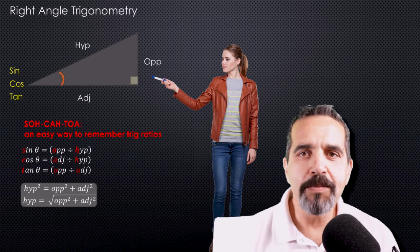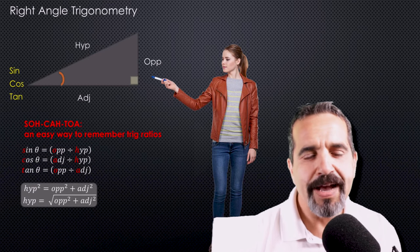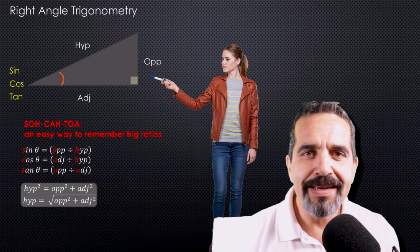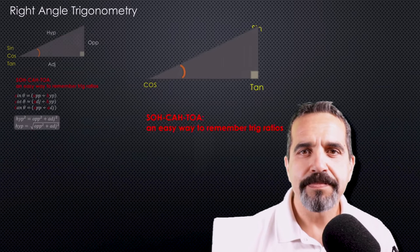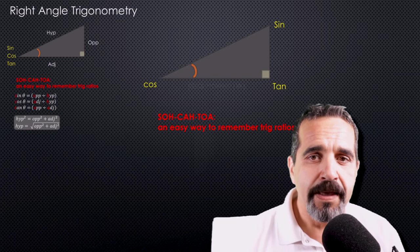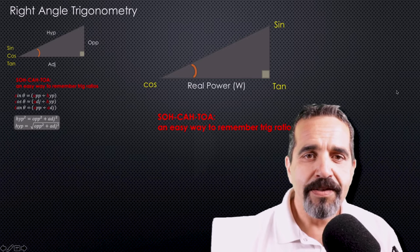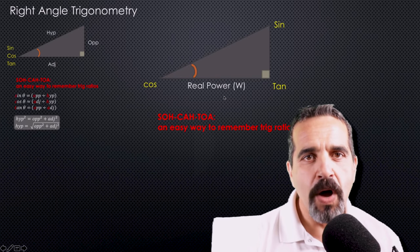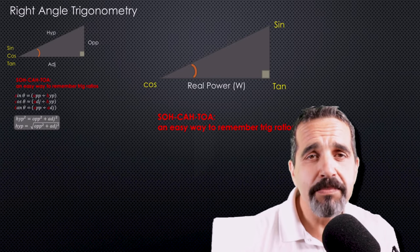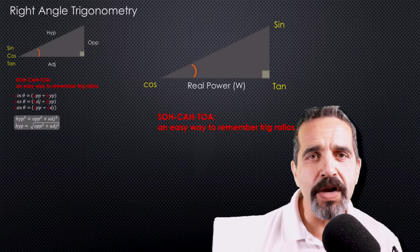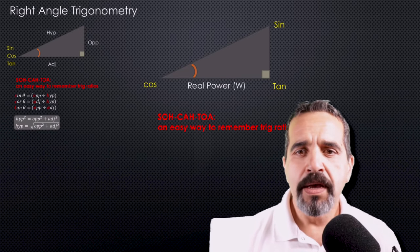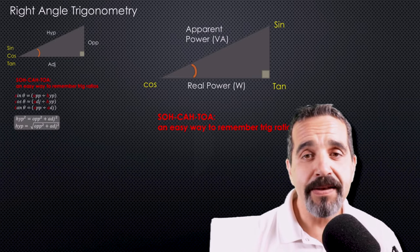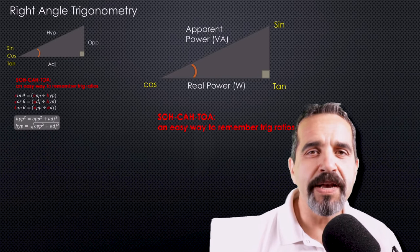So there you have it — right-angle trigonometry. Now, how does this translate into understanding Power Factor? We need to define some terms, because all our sides are going to mean something electrically. The adjacent side is equal to real power, measured in watts. You can think of the watts as the work being performed — that's exactly what wattage does, the work being performed by electricity.